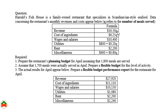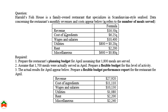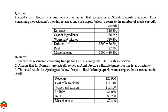The revenue formula is 16.50Q, meaning revenue depends on the number of meals served. The cost of ingredients is 6.25Q — also dependent on the number of meals served. Wages and salaries are 10,400 with no Q indication, meaning it is a fixed expense. Utilities expense is 800 plus 0.20Q — this is a mixed cost: 800 is the fixed portion and 0.20 is the variable portion per meal served.